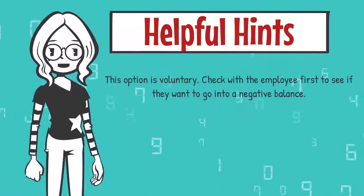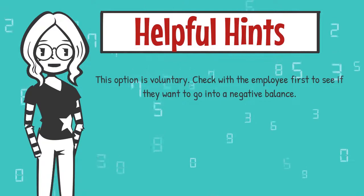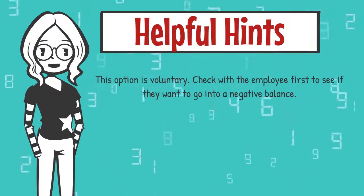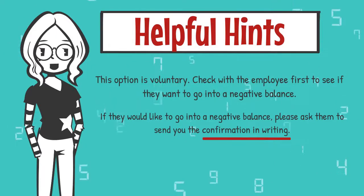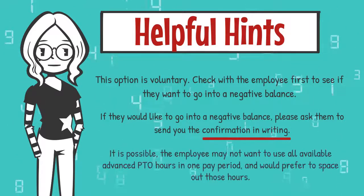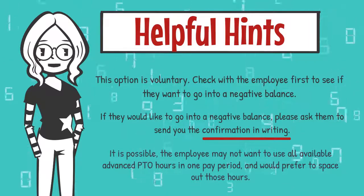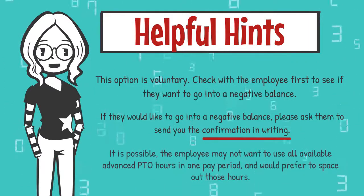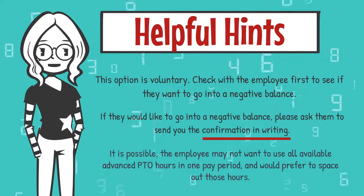Here are some helpful hints as you code. Know that this option is voluntary — check with the employee before applying the advancement. If they would like to go into a negative balance, please ask them to send you the confirmation in writing. Advanced PTO hours can be for full or partial days; the employee may not want to use all the hours in one pay period and would prefer to space out those hours.